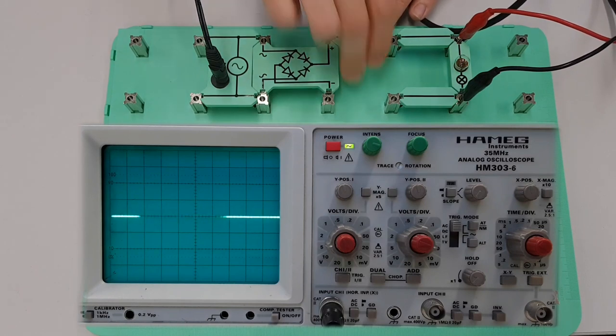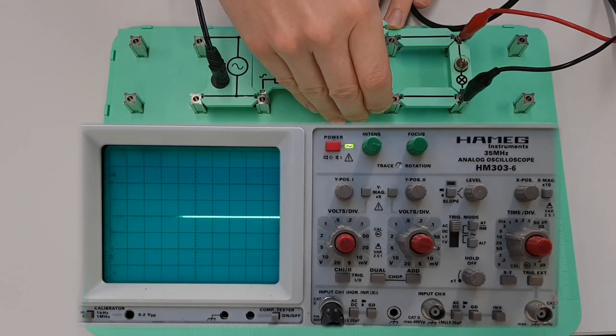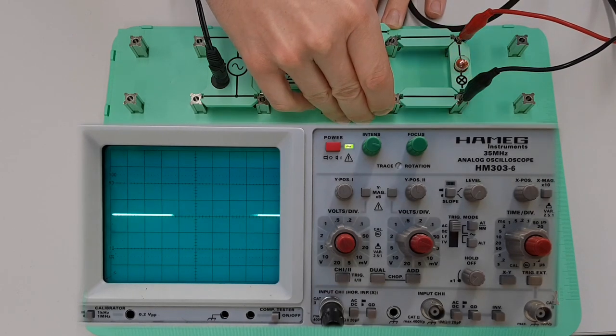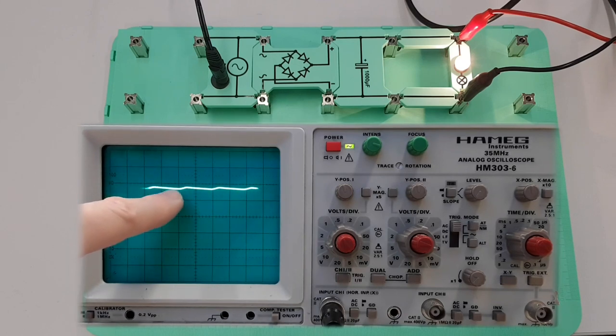Okay, so we'll remove these two and we'll put this capacitor in and watch what happens now to the DC waveform. You can see there that it's pretty much completely smooth, yeah.